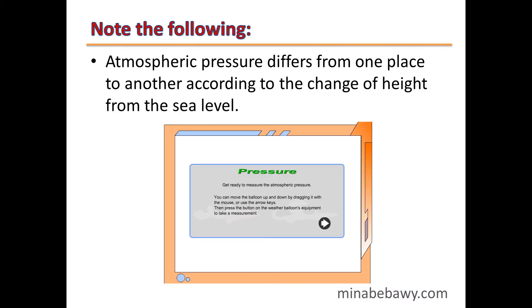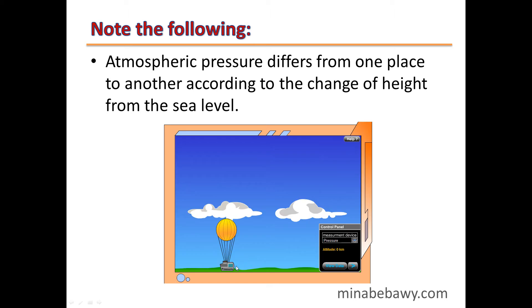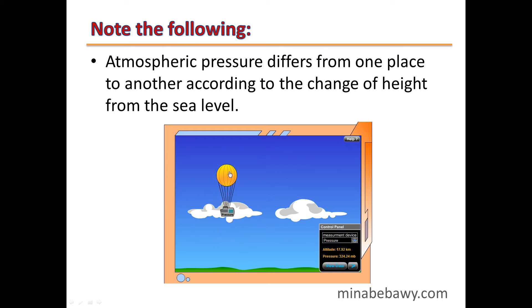Atmospheric pressure differs from one place to another according to the change of height from sea level. As shown in this demo, a balloon at sea level has a pressure of 1013.25 mb. By increasing its elevation to about 10.64 km, its pressure decreases to 324.24 mb. At about 21 km, pressure decreases to about 45 mb, and at about 31 km, it decreases to about 10 mb.